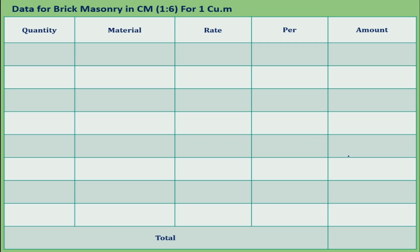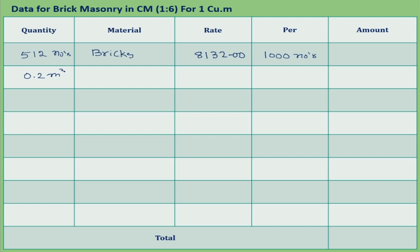Now calculate the cost of brick masonry using the quantities given in the question. Bricks: 512 numbers at a rate of 8132 rupees per 1000 numbers. Cement mortar 1:6: 0.2 cubic meter at 2311 rupees per cubic meter. Masons: 1.4 numbers — considering 30% first class mason and 70% second class mason — giving 1.4 into 0.3 numbers of first class mason.